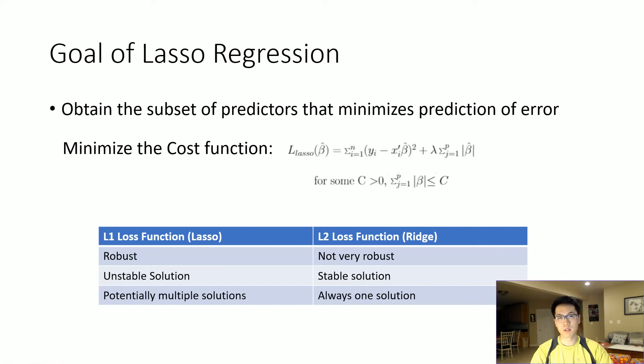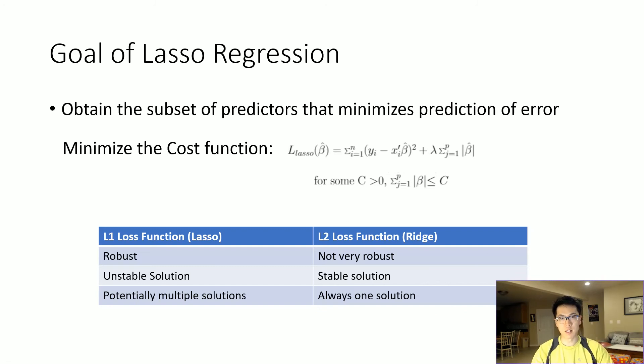Whereas L2 is not very robust, it has a stable solution and always has one solution. So I briefly went over lasso regression and what the theory is on the back end in terms of how to use it.